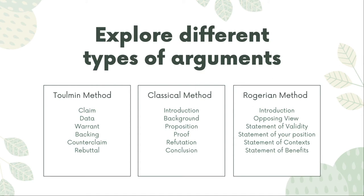The classical method of argumentation comes from the Greek philosopher Aristotle, down through the Roman and Greek traditions to us today. This method focuses on careful definition of the claim and a close application of the evidence. The goal is that both the writer and the reader will understand the issue at hand as clearly as possible and come to an agreed-upon conclusion for next steps. This method starts with an outline of the significance of the topic, historical information to help the reader understand the issue as fully as they possibly can, then argues the author's position, offers proof in the form of reasons and evidence, and anticipates any counter-arguments before concluding.